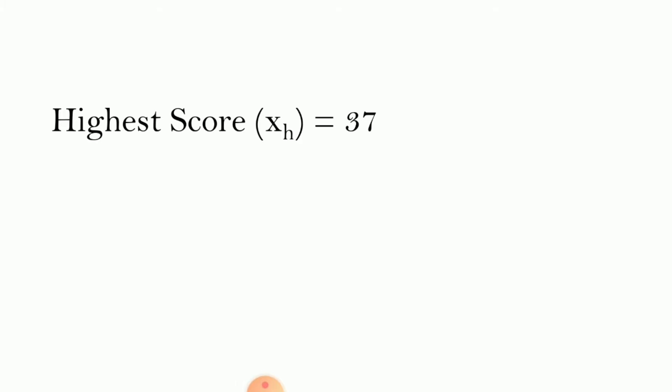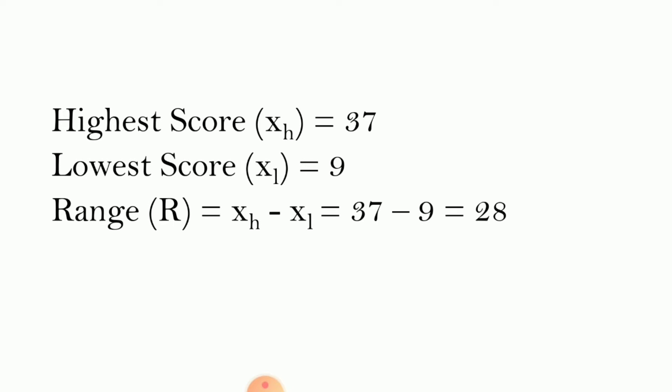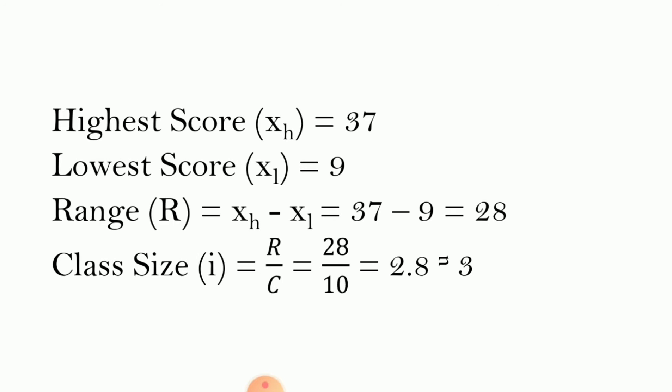From our data, the highest score is 37 and the lowest score is 9. Getting the range: 37 minus 9 equals 28. For the class size, that is the range divided by the desired number of class intervals. With a desired class size of 10, that is 28 divided by 10, which equals 2.8, rounded to 3. Notice that the lowest score, 9, is divisible by the computed class size of 3. However, if the lowest score is not divisible by the computed class size, then you can try another desired class size — it is a matter of trial and error.